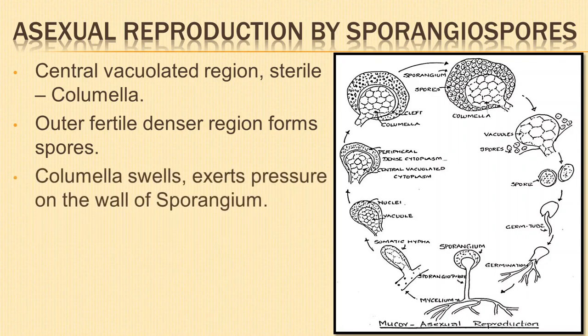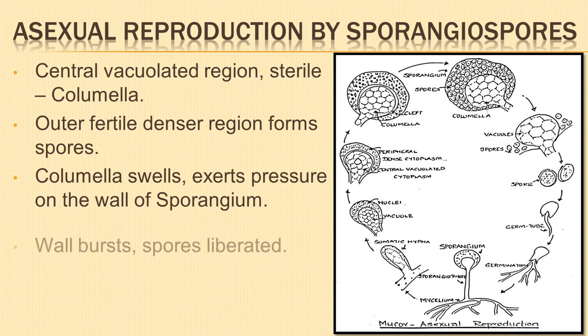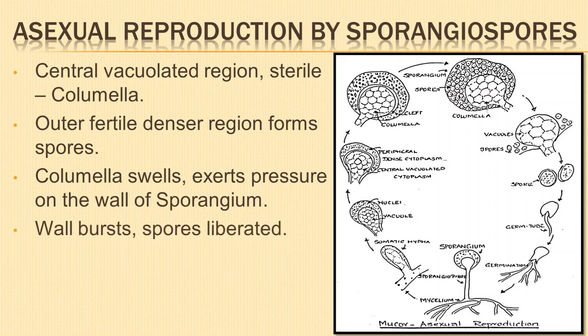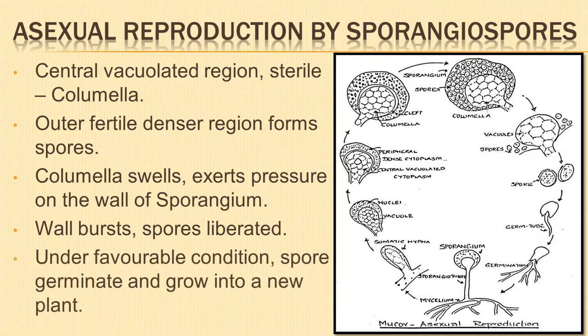Due to the accumulation of fluid in the columella, it swells and exerts pressure on the thin wall of the sporangium. The wall bursts and the spores are liberated. Under favourable conditions, they germinate and grow directly into the Mucor plant.